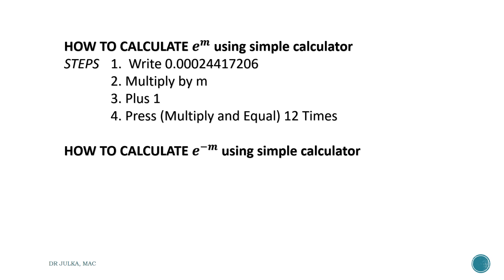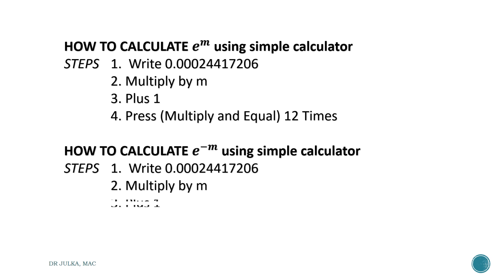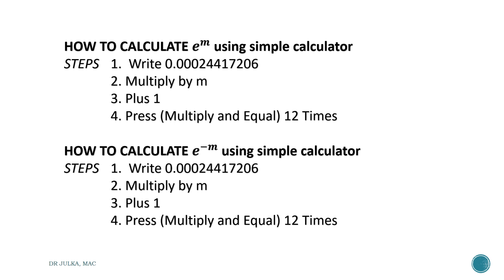How to calculate e raised to the power minus m using a simple calculator: First, write 0.00024417206 in your calculator. Multiply by m, then add 1. Press multiply and equal 12 times — multiply equal 1, multiply equal 2, multiply equal 3, and so on 12 times. In the last step, press divide and equal. This will give you the value of e raised to the power minus m.